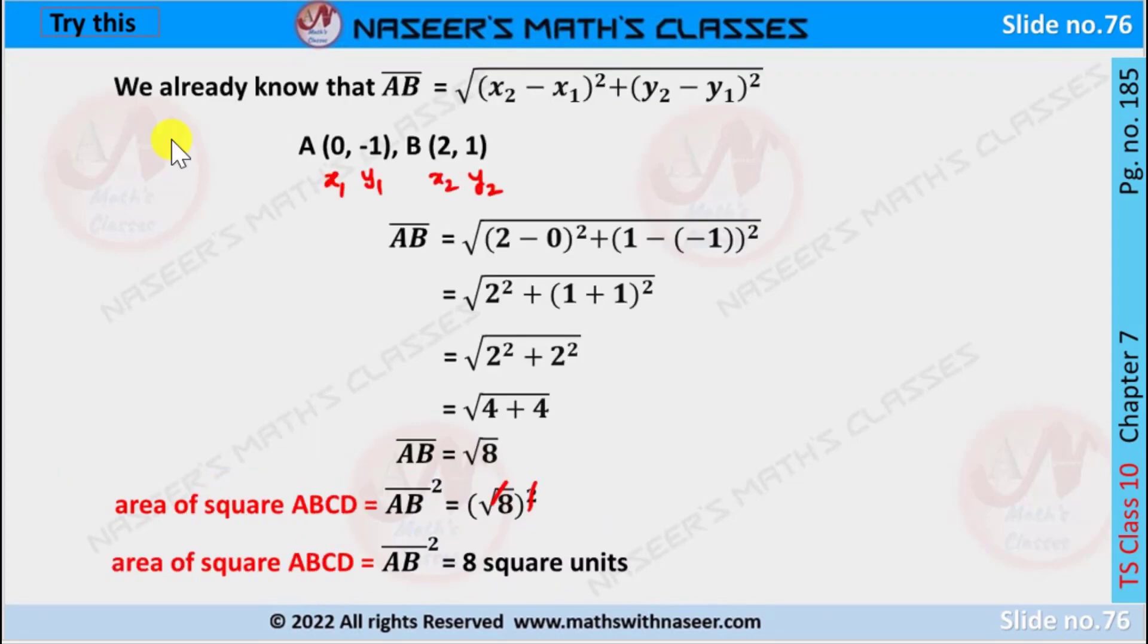In coordinate geometry we have to find the length of the side AB as square root of (x₂ - x₁)² plus (y₂ - y₁)². A is (0, -1) as x₁, y₁ and B is (2, 1) as x₂, y₂.